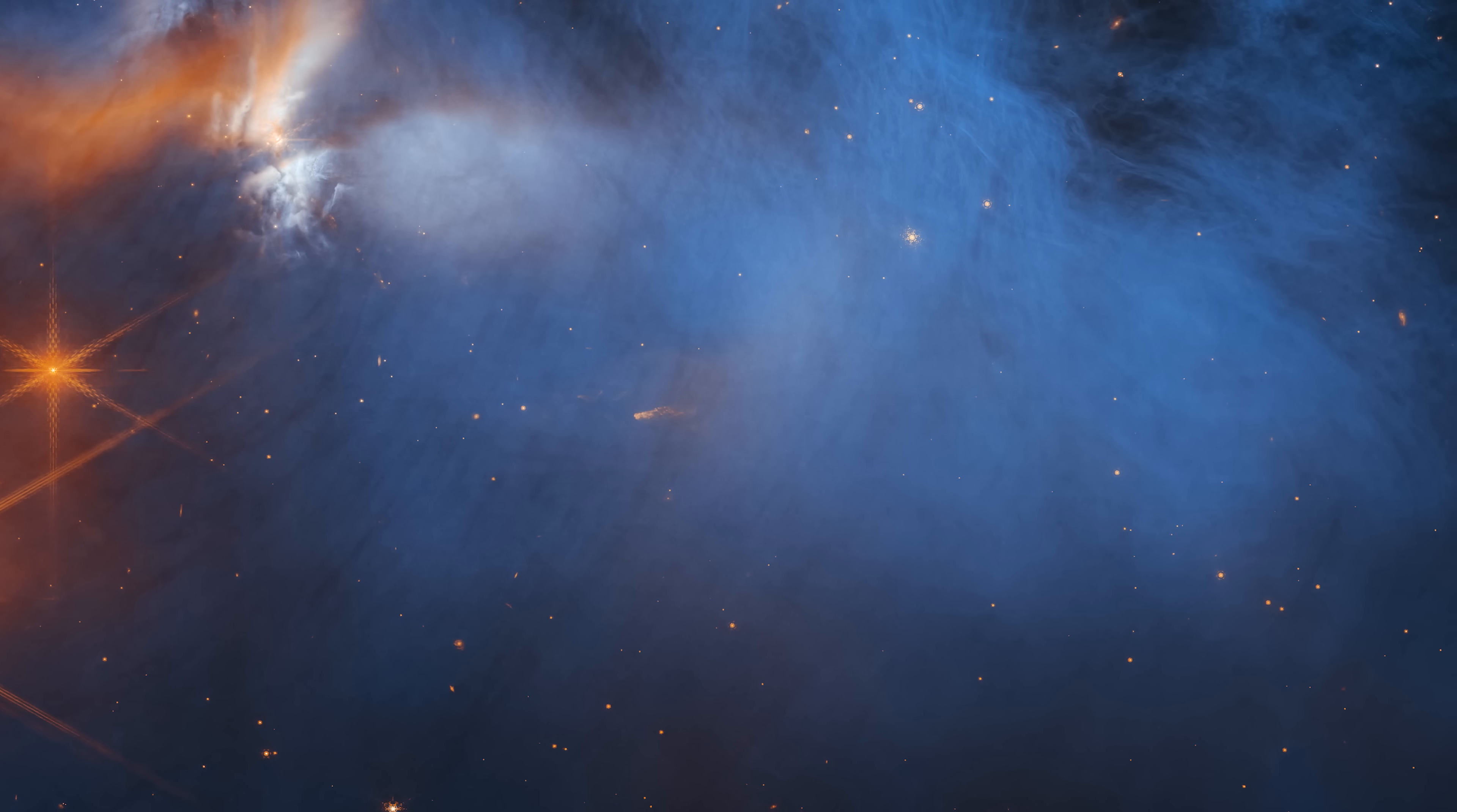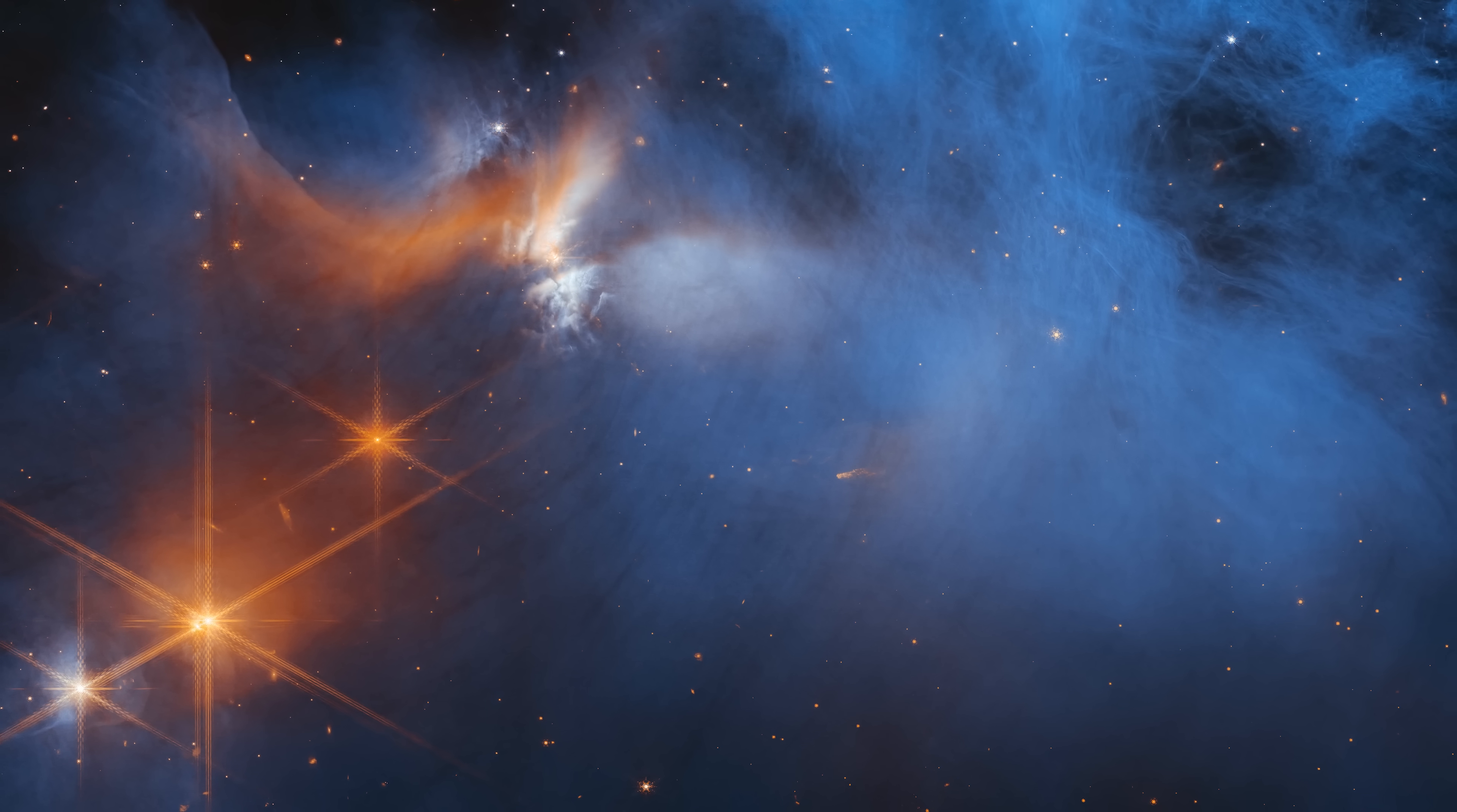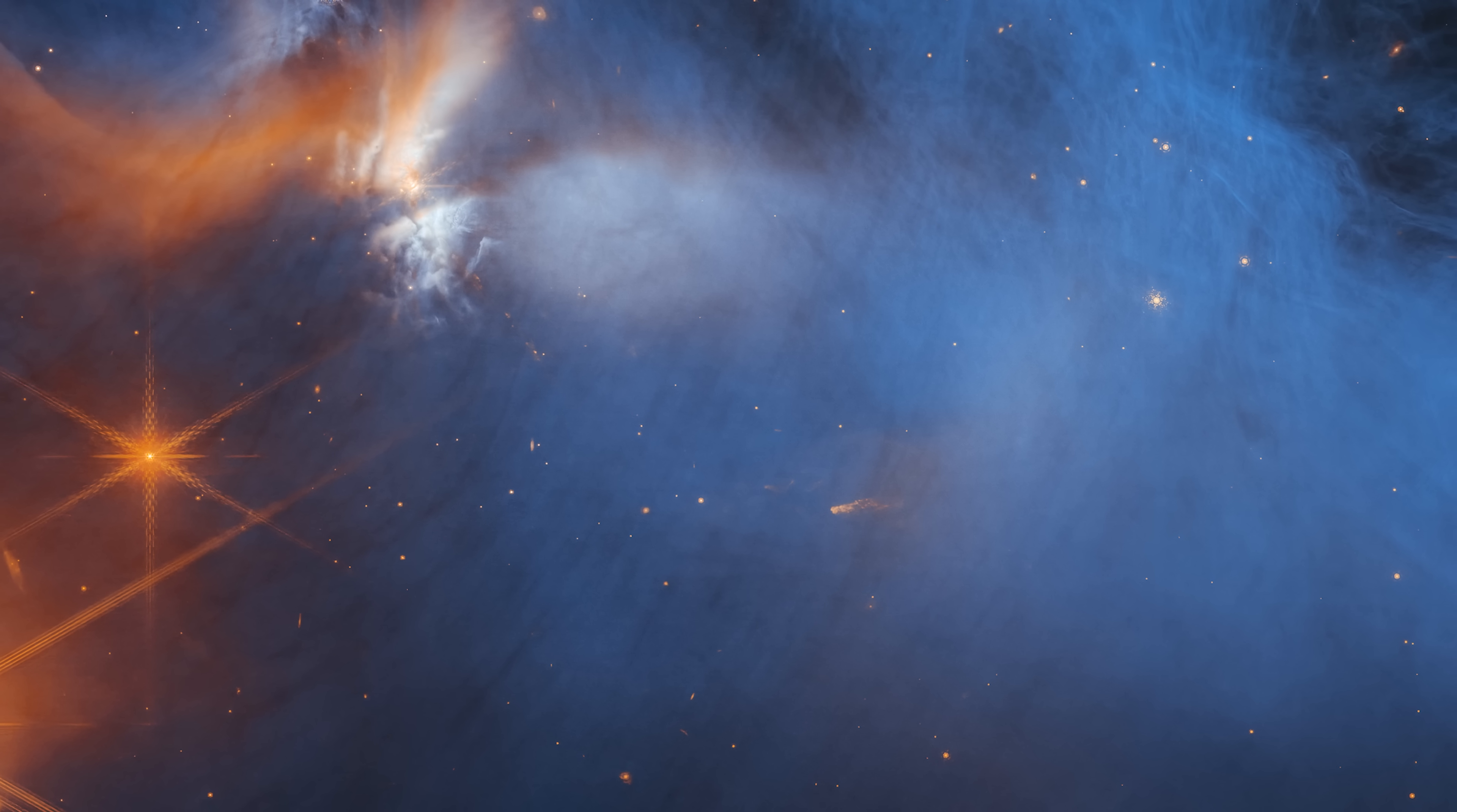This is an ice cloud. More specifically, it is the Chameleon 1 Dark Molecular Cloud, another birthplace of stars. As you can imagine, an ice cloud is not hot enough to radiate light with emission lines. So here, scientists need to use a different technique to learn its chemical composition.